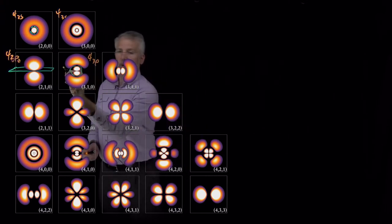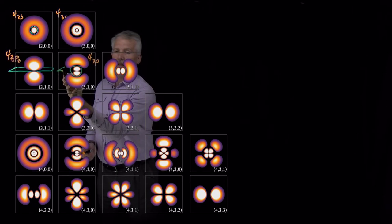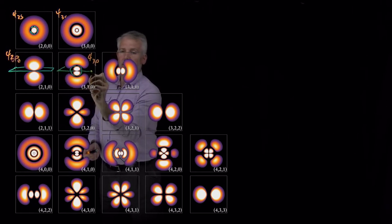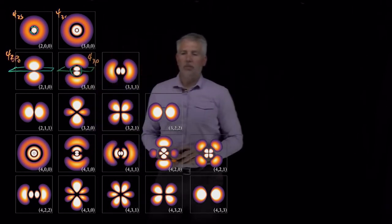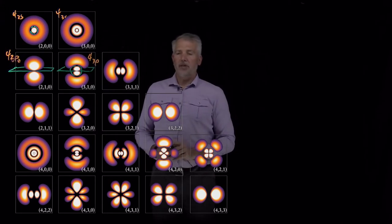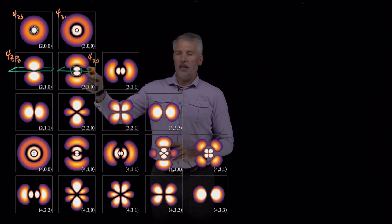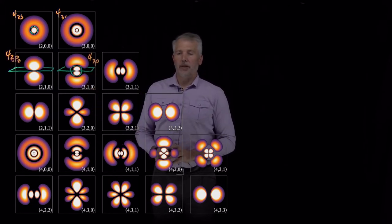as well as the x-y plane. So we have both an angular node in the x-y plane or the theta equals pi over 2 plane, as well as a radial node at this particular value of r where we never find the wave function.